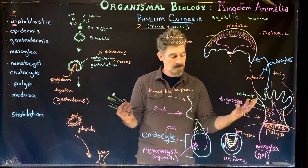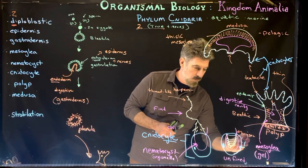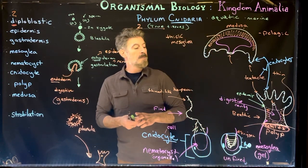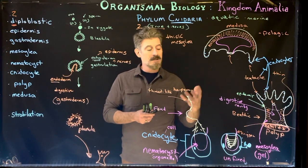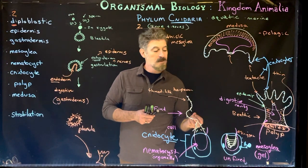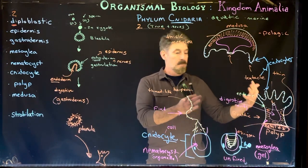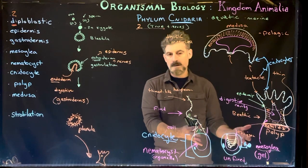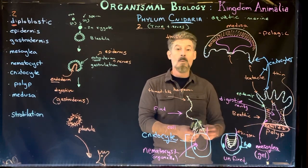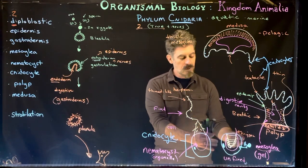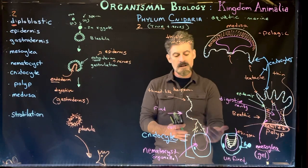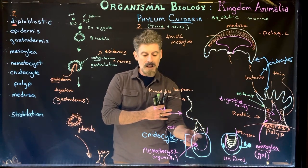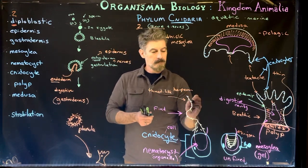When a non-self organism bumps into a tentacle, the trigger fires and a huge amount of water rushes into the nematocyst chamber via a very rapid osmotic process — possibly one of the fastest known movements of water across a cell membrane. That water pressure builds up and forces the structure to invert and eject the harpoon of the nematocyst outward into the target organism.